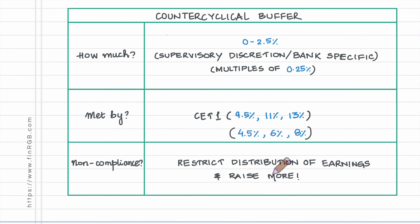This video was about understanding the motivations behind the capital conservation buffer and the counter cyclical buffer, how much of these buffers is imposed on individual banks, how these requirements are to be met, and what happens in the event of non-compliance with respect to either of these two requirements.